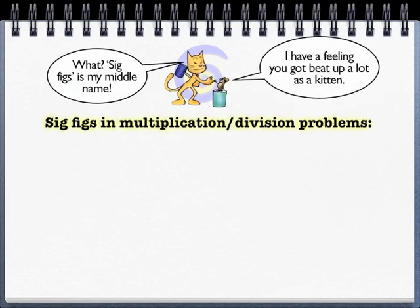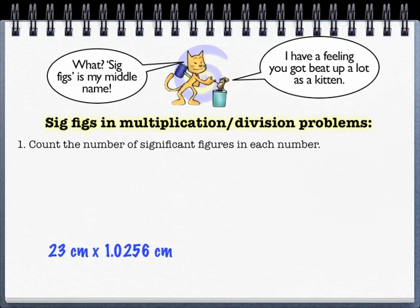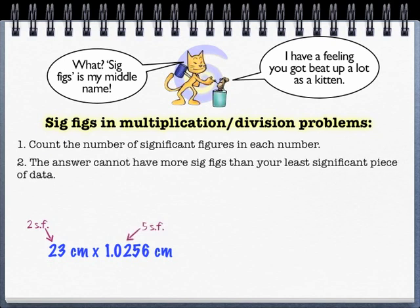Significant figures for multiplication and division problems are extremely straightforward. Students don't usually mess this up because all you have to do is count the number of sig figs in each of the numbers, and your answer can only have the same number of sig figs as your least significant piece of data.